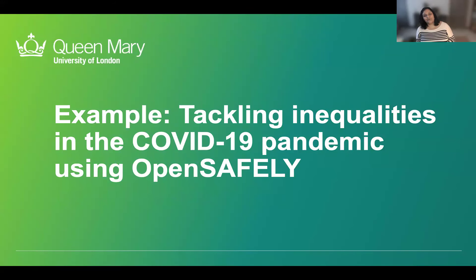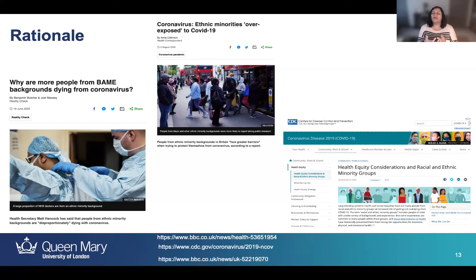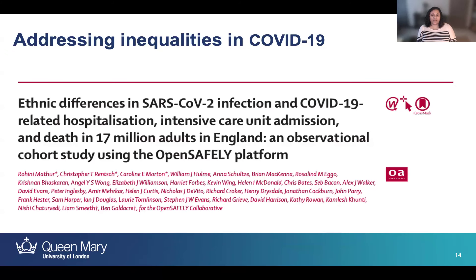Moving on to some other examples from later in my work: this is work I did with OpenSAFELY during the COVID-19 pandemic. We knew from very early on in news reports that there were striking ethnic disparities in COVID-19 related mortality, not just in the UK but internationally. Many hypotheses were being generated about why there were such stark inequalities in the impacts of COVID in our multi-ethnic populations. I led some work with the OpenSAFELY Collaborative to look at ethnic differences along the pathway from infection, hospitalization, intensive care admission, and death in 17 million adults.